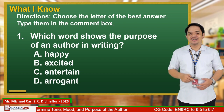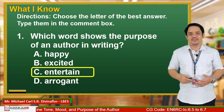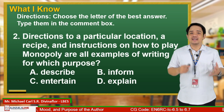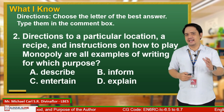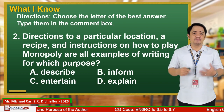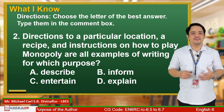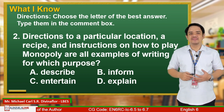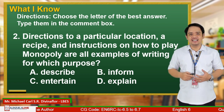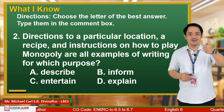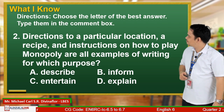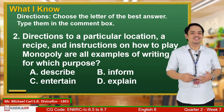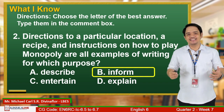The correct answer is letter C — it is to entertain. Number 2: Directions to a particular location, a recipe, an instruction on how to play Monopoly — are all examples of writing for which purpose? A. Describe? B. Inform? C. Entertain? D. Explain? The correct answer is letter B — it is to inform.